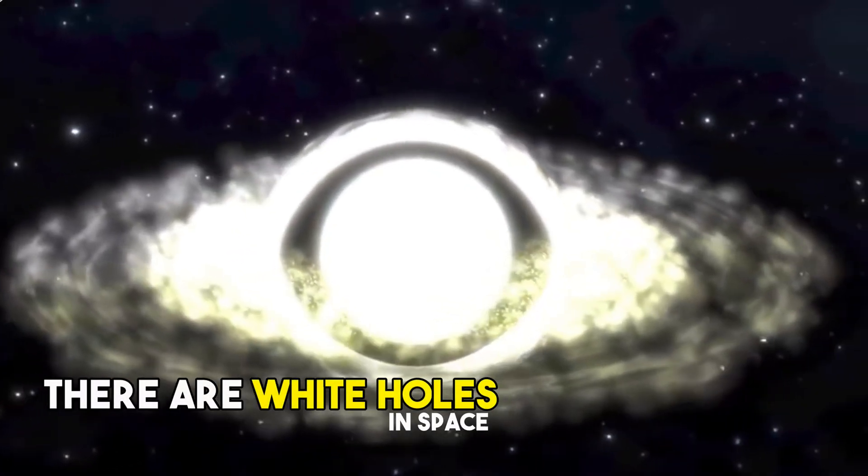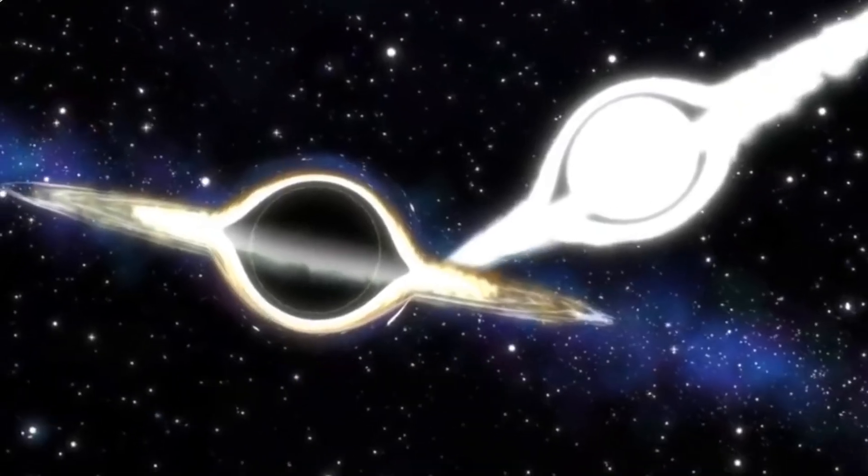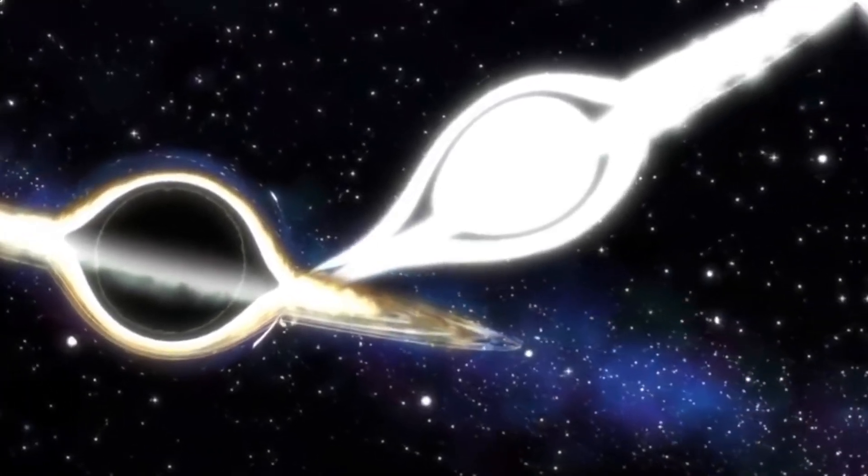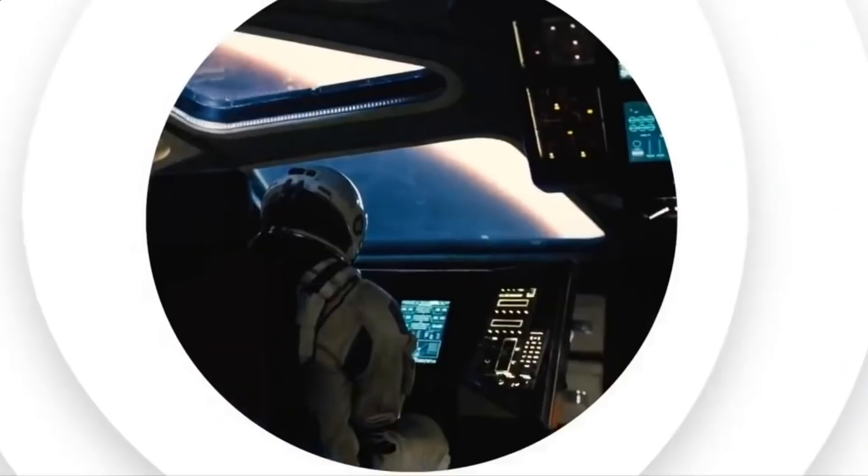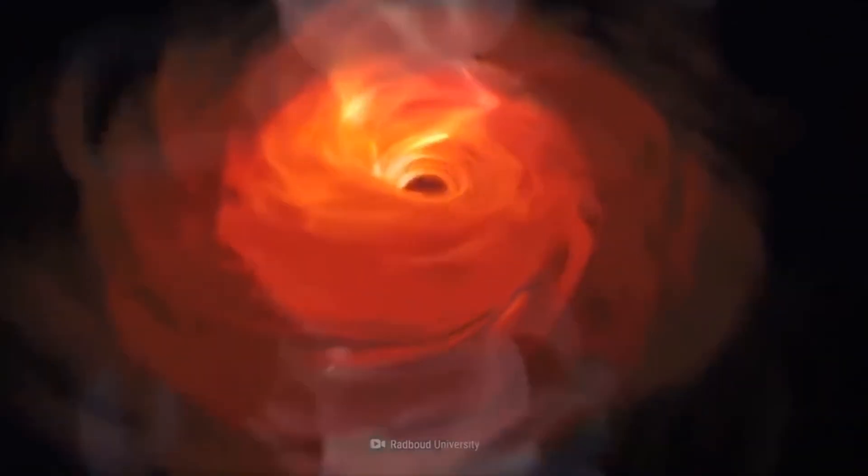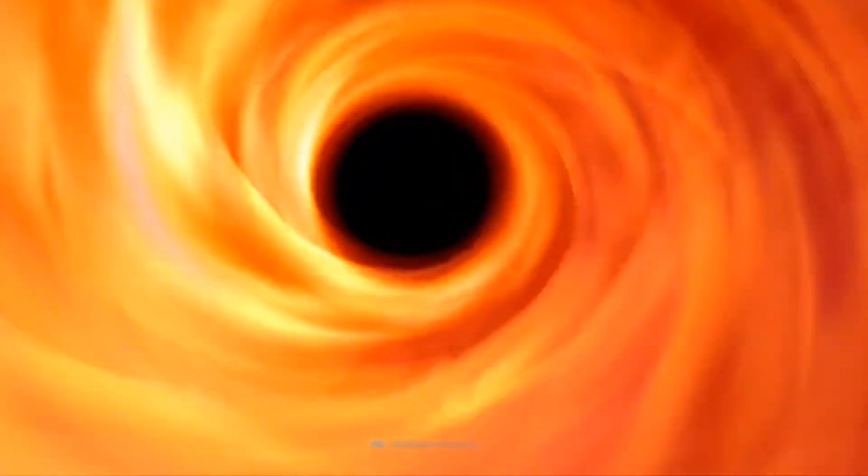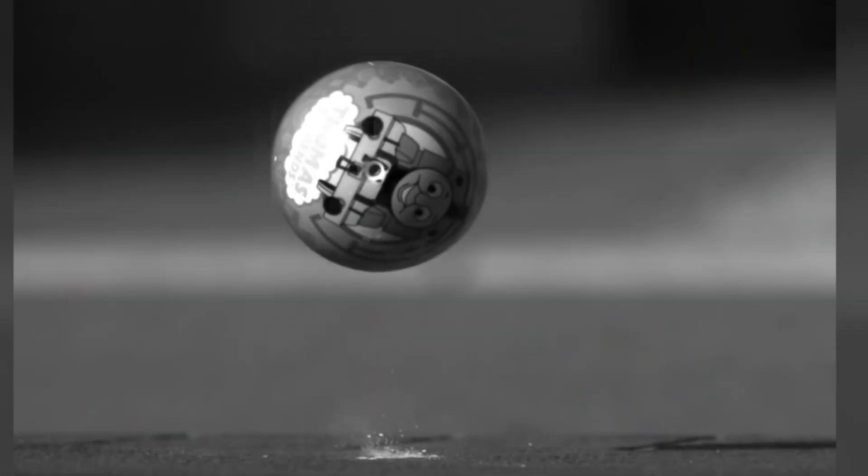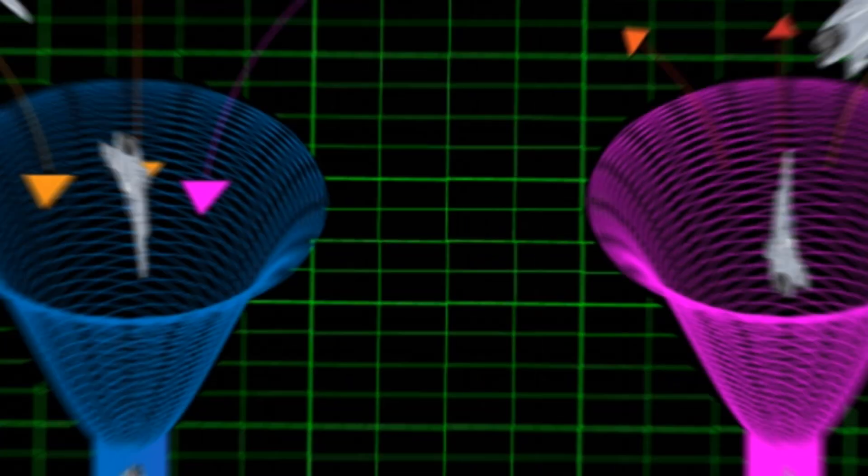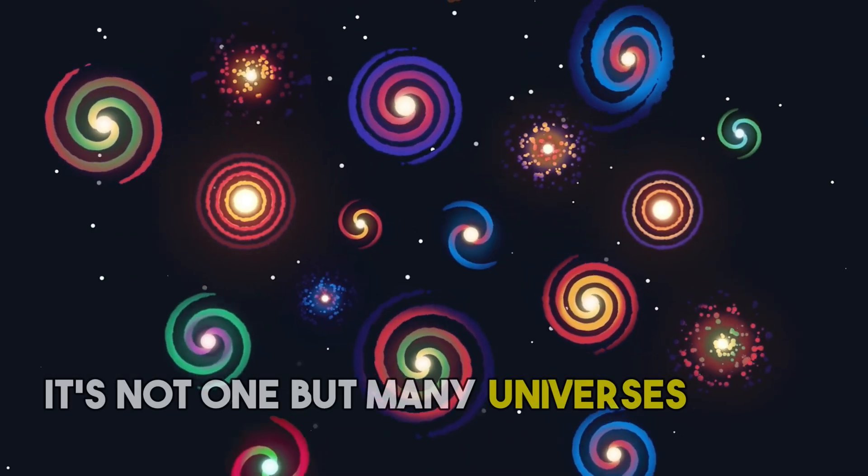There are white holes in space. White holes are the exact opposite of black holes. They don't swallow matter; instead, they spit it out. Science describes it as a time-reversed black hole, a region of space-time where matter spontaneously appears and explodes outwards. They also spit out light and matter rather than trapping it. This means if a human being got in the path of a white hole, he would be spat out.